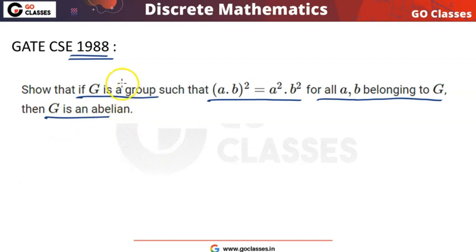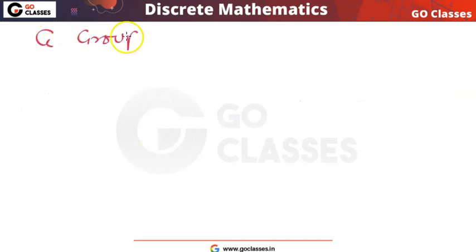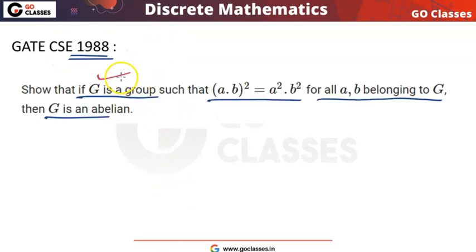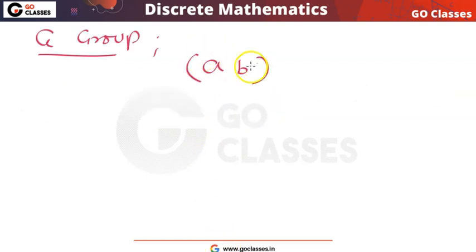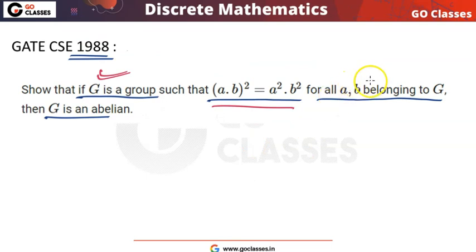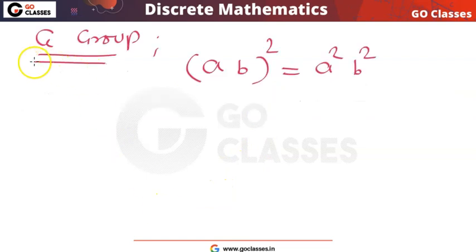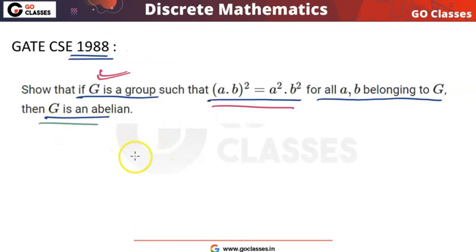This is a simple question. G is already given to be a group, and in this group G the property (ab)² = a²b² is satisfied for all a, b — whatever two elements you take from G, same or different, this equation is satisfied. We have to prove that G is abelian.